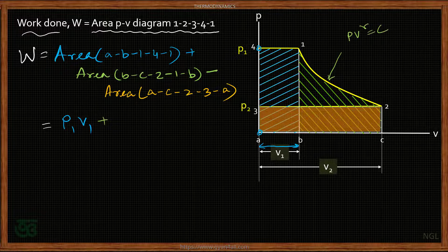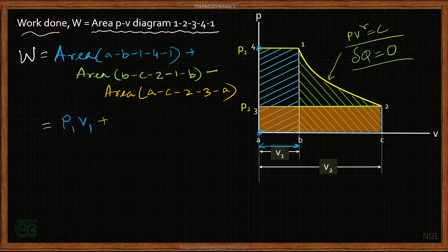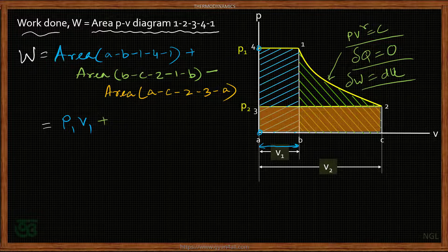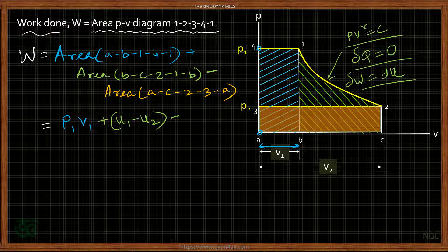For any adiabatic process, heat transfer equals zero. From the first law of thermodynamics for a non-flow process — since the expansion takes place inside the cylinder with no flow — we get that work done W equals the change in internal energy. So the area (work done) under the expansion curve equals u1 minus u2, because internal energy changes from state 1 to state 2. Then we subtract the lower rectangular area, where height equals p2 and width equals v2.